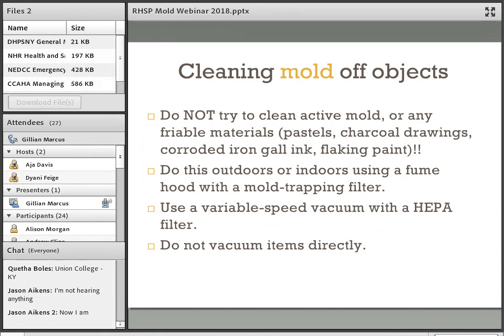Once you've inactivated the mold, the next step is cleaning those inactive mold spores off of your material. You want to make sure you're cleaning inactive mold spores — active mold will smear and can spread. You also don't want to clean mold, even inactive mold, off of pastels, charcoal drawings, corroded iron gall ink, or flaking paint — basically anything that is friable, delicate, has a powdery or flaking surface, or is rare or valuable. That's a job for a conservator. Mold removal should be done either outdoors or indoors using a fume hood with a mold-trapping filter, so you don't inadvertently spread active mold around the facility.